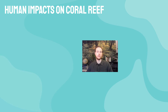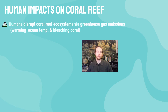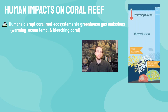One of the biggest ways we disrupt coral reef ecosystems is via greenhouse gas emissions. As we combust fossil fuels and cut down trees, CO2 and other greenhouse gases warm the earth and the ocean. When the ocean warms, those beneficial zooxanthellae are forced to leave because conditions are outside their range of tolerance — this is coral bleaching. The coral becomes weaker, susceptible to disease, and has far less energy to repair itself.